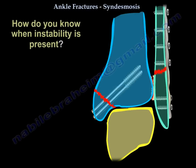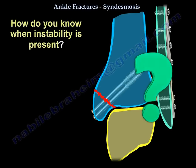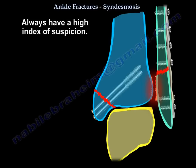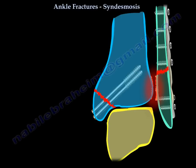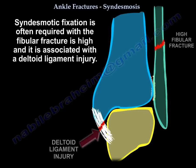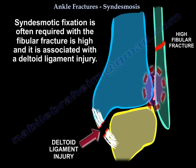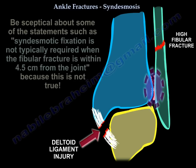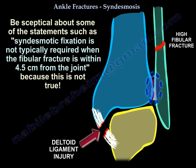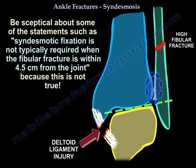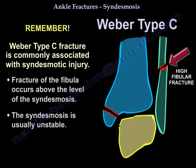How do you know if there is instability present? Always have a high index of suspicion. Syndesmotic fixation is more often required when the fibular fracture is high and there is a deltoid injury. Be skeptical about statements such as fixation is not typically required when the fibular fracture is within 4.5 cm from the joint — because that's not true. Just remember, Weber C is commonly associated with syndesmotic injury.